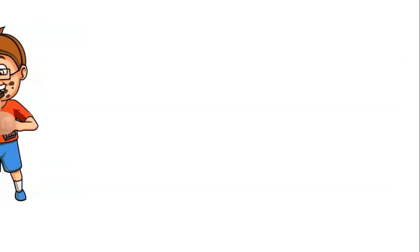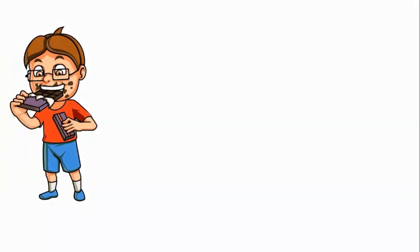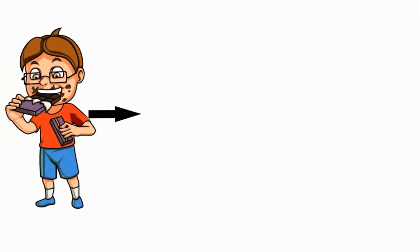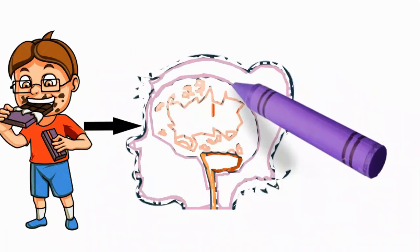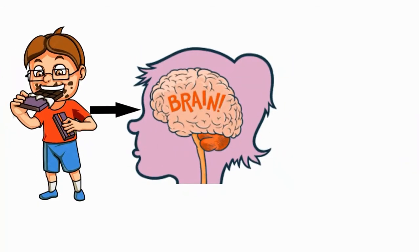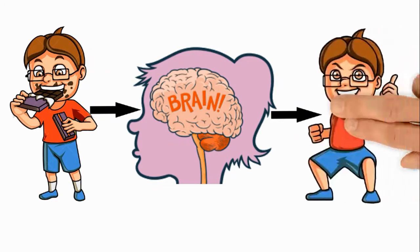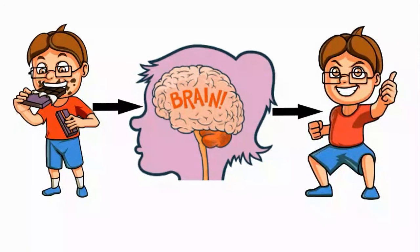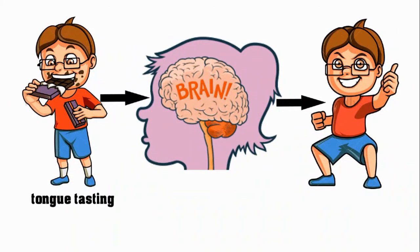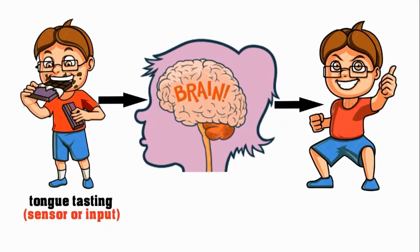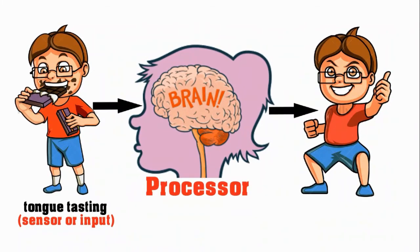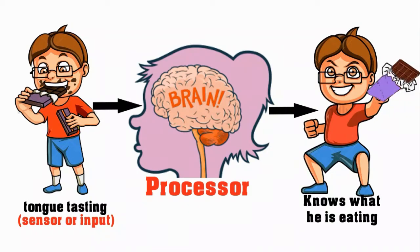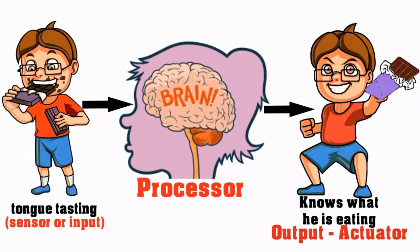For instance, imagine a boy closes his eyes to eat chocolate. His tongue tastes the chocolate and sends the information to his brain. And then from the brain, the boy knows what he is eating. So the tongue tasting it is a sensor, the brain processing it is a processor, and the boy knowing he is eating chocolate is the output.